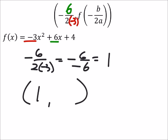So in my vertex, I can see my x value is 1. And then I'm just going to go ahead and replace all the x values in the original function with 1, because now I'm looking for f of 1.